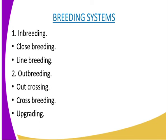Then, breeding systems. We have two: the first one is inbreeding, and we have crossbreeding, and also we have line breeding. Inbreeding refers to mating very closely related animals, such as siblings — a brother and a sister cow being mated — or a parent bull mating with the daughter.